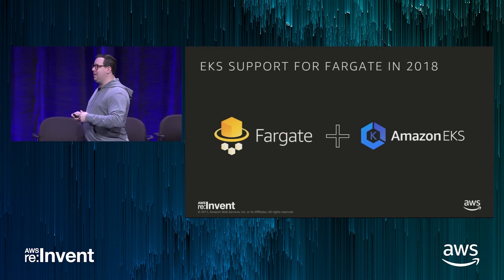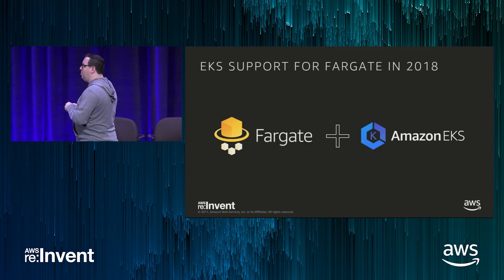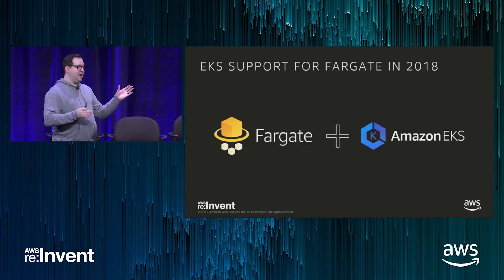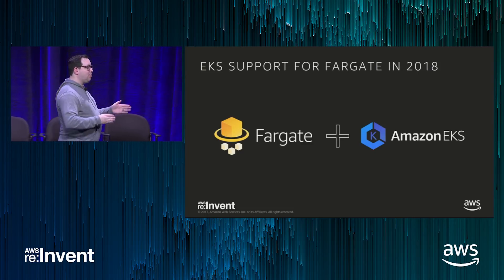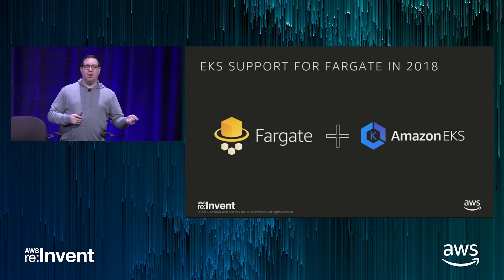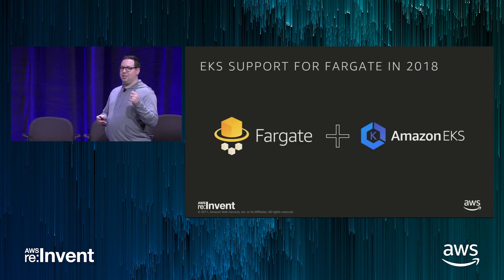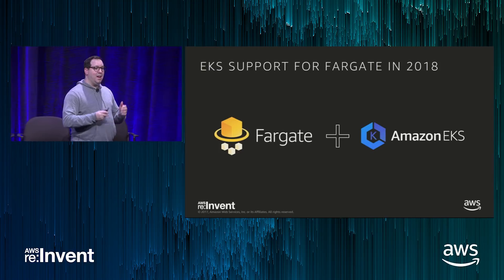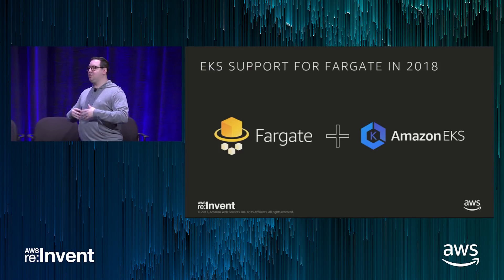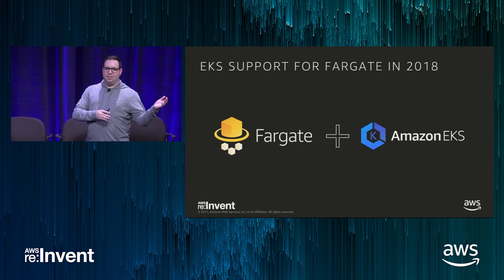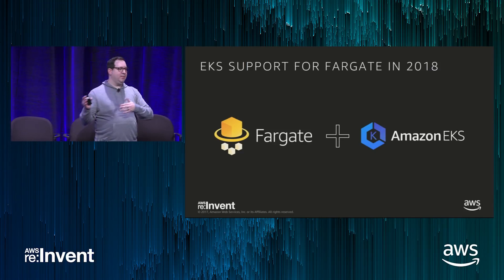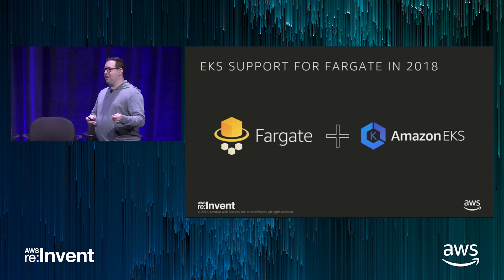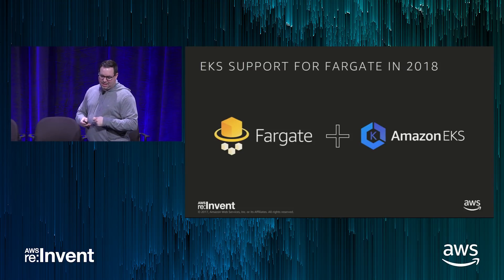You heard us talk about our new managed Kubernetes offering. We want to make this technology — AWS Fargate — work across orchestration. Our goal in 2018 is to make it such that you can use Fargate with Kubernetes clusters as well. The goal is to give you choice: whether you want to use ECS as the orchestration or Kubernetes, it's your choice which engine to use, and we're going to make it such that Fargate enables all those use cases.